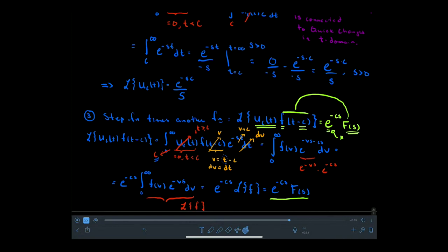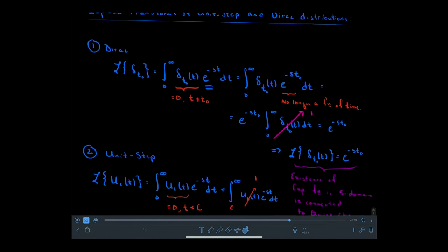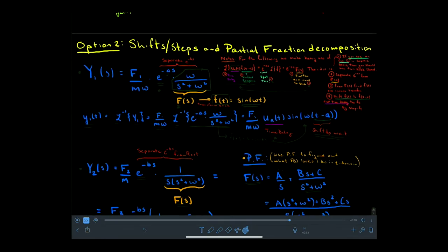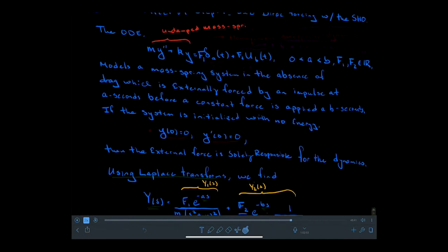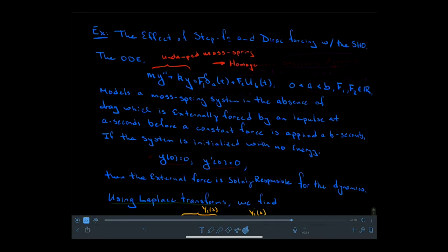With these three transforms, we can now figure out what's going on with an illustrative mass-spring problem. We're ready to talk about the effect of step function and Dirac external forcing with the simple harmonic oscillator. The left-hand side of our ODE is an undamped mass-spring system, giving rise to homogeneous sinusoid dynamics. The initial conditions involve no initial displacement and no initial velocity, so any dynamics will be a result of the external force — which here is a Dirac pulse at time t = A.